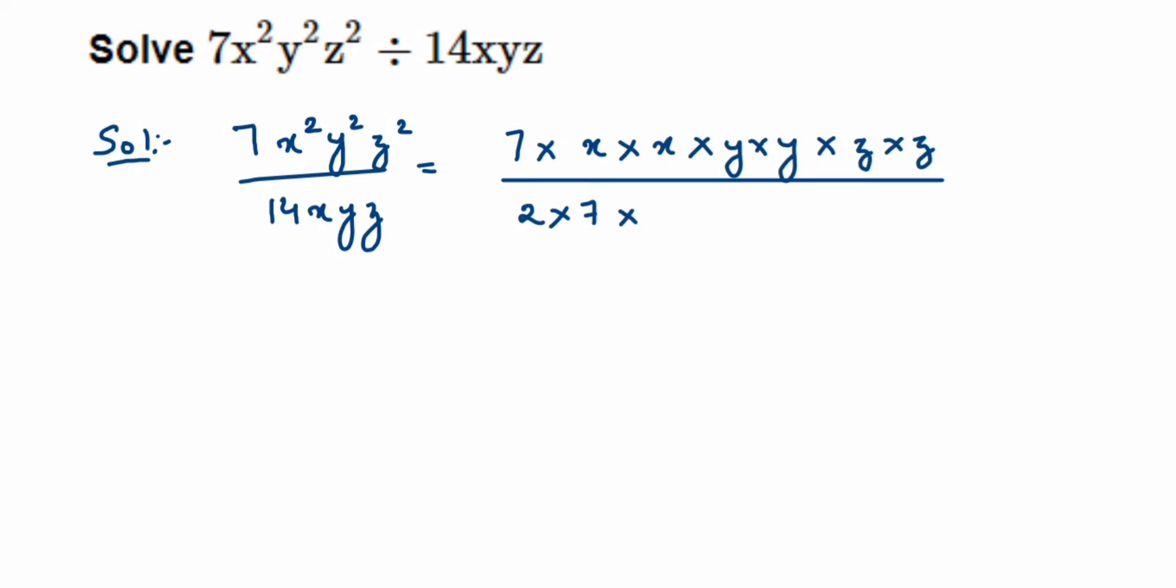Now what we're going to do, we're going to cancel out the ones which are common in the numerator and denominator. So here 7 is common, I can cancel 7. I can cancel one single x, I can cancel one single y, I can also cancel one z.